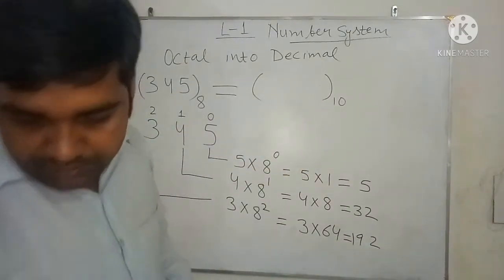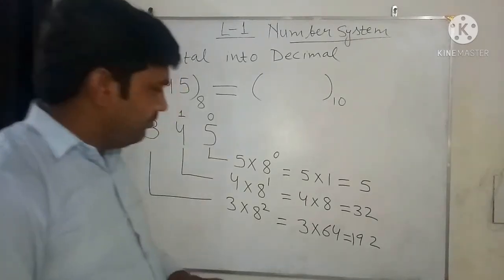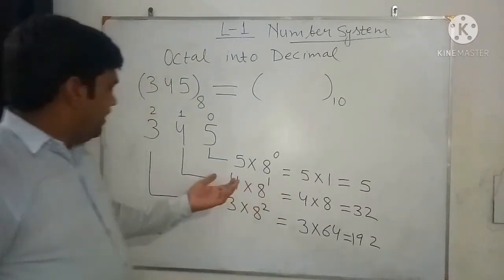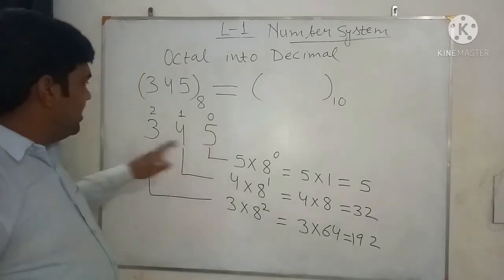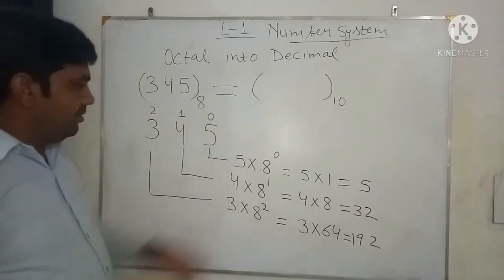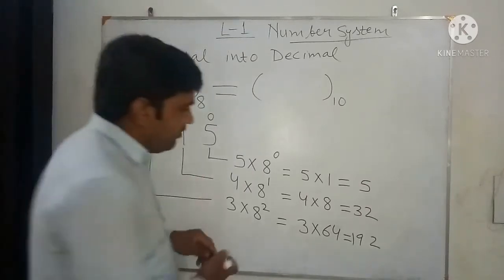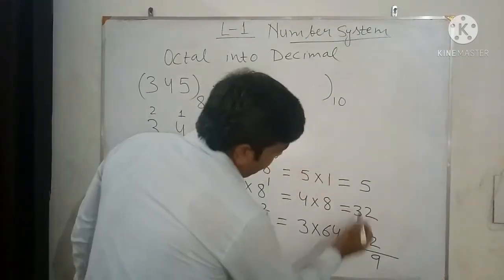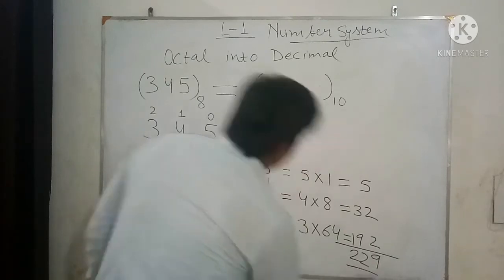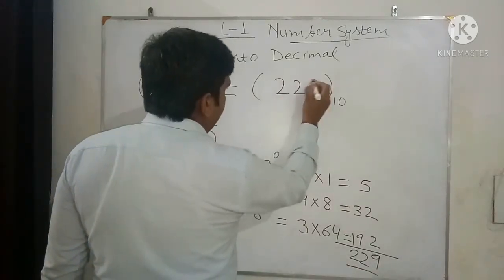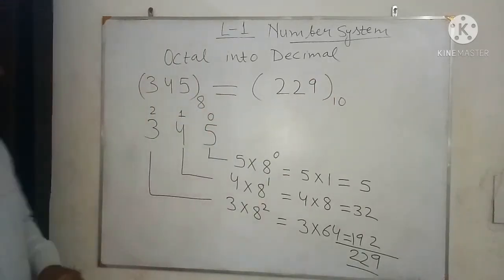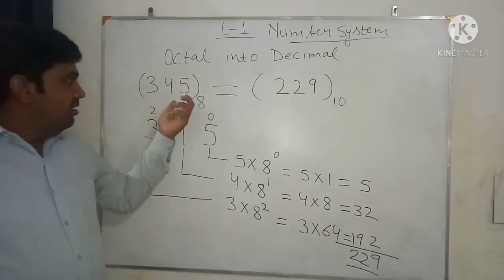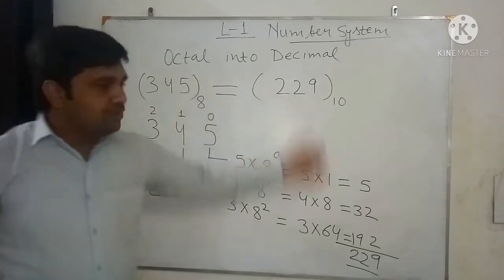After getting all these values, we add the three numbers. This positional value means the place value of each digit of the octal number system. Adding 5 plus 32 plus 192 gives us 229. So 229 is the decimal equivalent of the octal number 345.